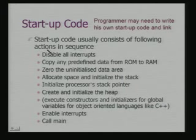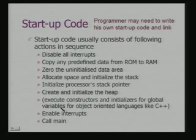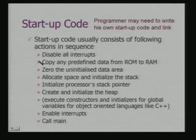Startup code usually consists of the following actions in sequence: disable all interrupts, copy any predefined data from ROM to RAM, zero the uninitialized data area, allocate space and initialize the stack, initialize the processor's stack pointer, create and initialize the heap, execute constructors and initializers for global variables for object-oriented languages like C++, enable interrupts, and then call main. You are basically preparing the environment for the software to run. Many of these jobs on a general purpose computing platform would be done by a loader, but there is no loader in this case — the software is loaded directly onto the processor's memory or the target board's memory.